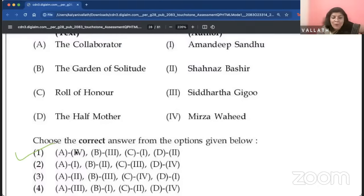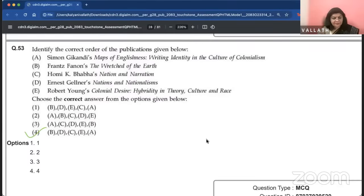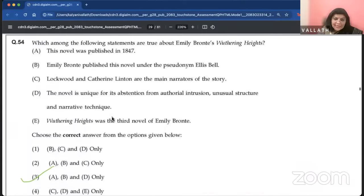Then, there is a match the following here. The collaborator, Mirza Vahid. The garden of solitude, Siddhartha Gigu. Role of honor, Amandeep Sandhu. They want you to be real, knowledgeable people who have an interest in whatever is happening around you, who read a lot, who engage in discussions with other people, who read the newspapers. That is how you should mold yourself. D is the half-mother is by Shahnaz Bajir. Identify the correct order of the publications. Wretched of the Earth, 1961. Then, Ernest Gellner, then Homi K. Baba, then Robert Young, then Simon Gikandi.